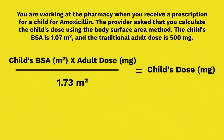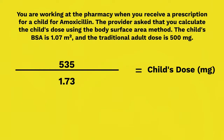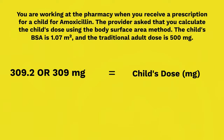Let's walk through the BSA solution together. Substituting in the values gives 1.07 meters squared times 500 milligrams divided by 1.73 meters squared. Multiplying the numerator gives 535 divided by 1.73, meaning the answer should be 309.2, or 309 milligrams. This is an example of solving a dosing equation using the body surface area method.